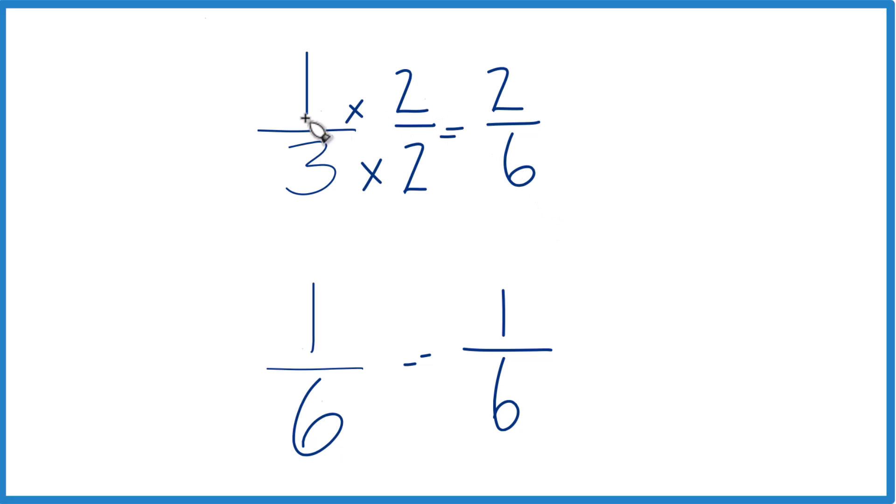And now you can see, again, 2 sixths, that's greater than 1 sixth. 1 third is greater than 1 sixth. And we can tell exactly how much because we have 2 sixths here and 1 sixths here. 1 third is 1 sixth larger.